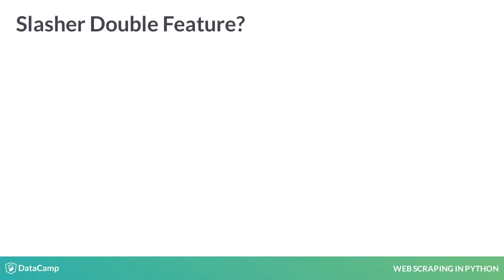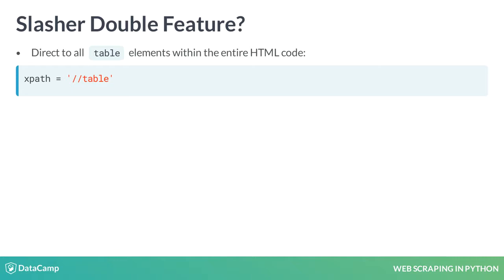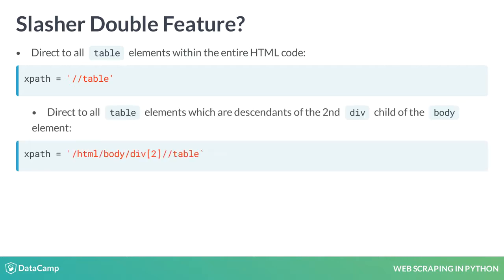Another important feature of XPath notation is the double forward slash. Using the double forward slash tells us to look forward all future generations, instead of one generation like the single forward slash. So for example, we could navigate to all table elements within an HTML document by simply typing double forward slash table. Or we could want to restrict to a specific div element — say the one we learned how to navigate to in the last couple slides — and navigate to all table elements which are descendants of that div element.